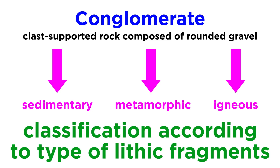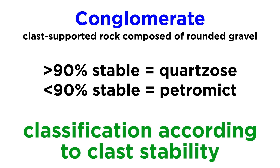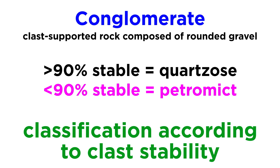The compositional classification of conglomerates can get a bit complicated, but is generally based on the type of lithic fragments that comprise the framework fraction, mainly distinguishing sedimentary, metamorphic, and igneous clasts. Additionally, they can be classified based on clast stability, similar to sandstone maturity. Conglomerates with greater than 90% stable clasts are said to be quartzose, while those with less than 90% stable clasts are said to be petromict.